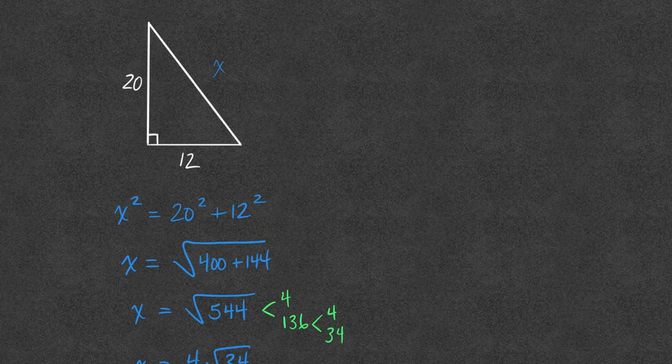And so you could then go through and say that x is 4 root 34. But notice, I had to work with some relatively big numbers. In another context, I was working through on Pythagorean triples and using proportionality to find actual dimensions.